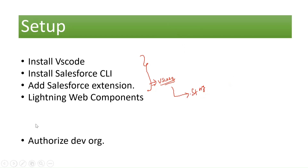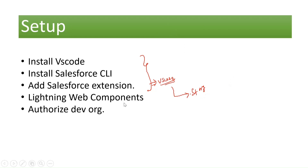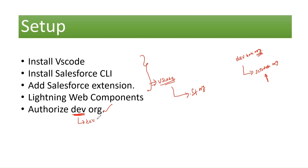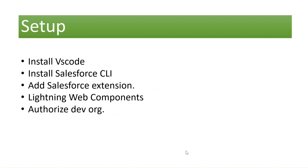The fifth step is to authorize the dev org. I'm doing it with the dev org, but if you want to do development in a scratch org, that's a different process where you need to authorize the dev hub org first, and then create your scratch org. I'm going with my developer edition org for this demo. Feel free to take the approach of authorizing your dev org and creating a scratch org and follow the same steps.